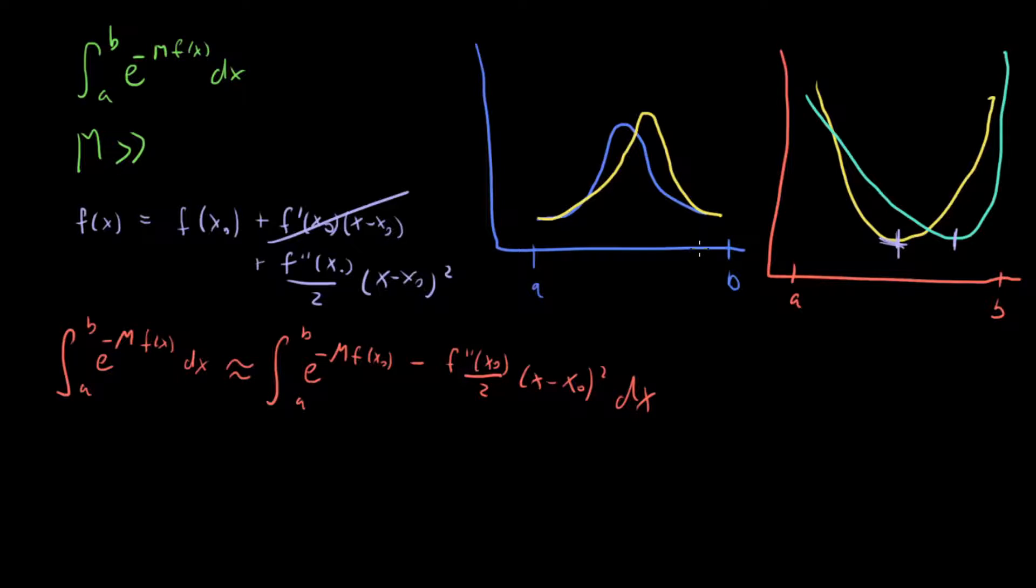Because of that, we can rewrite this whole thing - we can pull out this guy as a constant, e^(-m*f(x₀)), and then we can just let this integral go from minus infinity to infinity: e^(-f''(x₀)/2(x - x₀)²)dx.